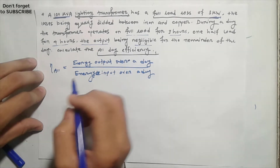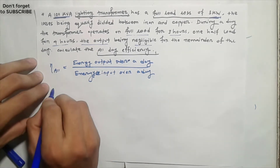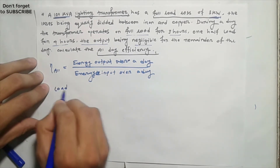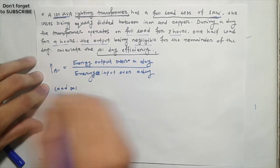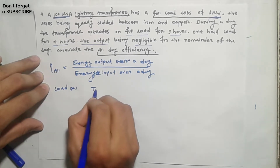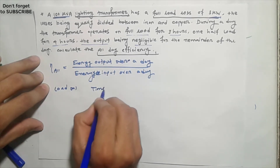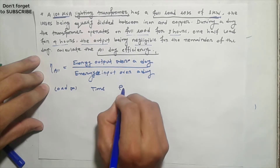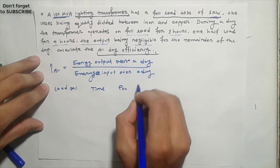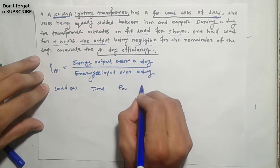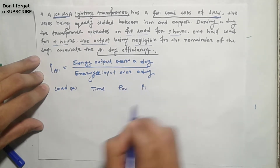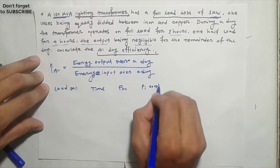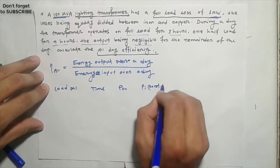I will show you all the features of the calculation. The table columns are: load, load fraction x, time, copper loss PCU, and iron loss PI. Iron loss is constant throughout the day.